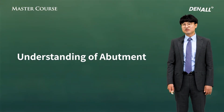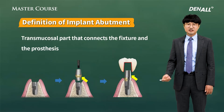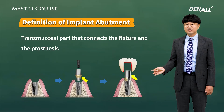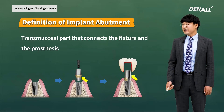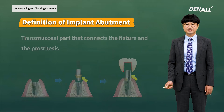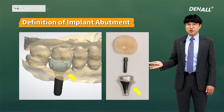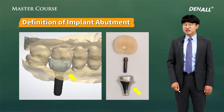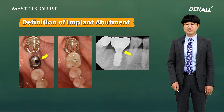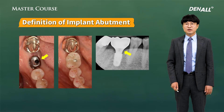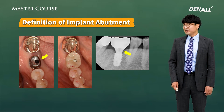First, what is an abutment? As you can see, the abutment is a transmucosal part that connects the fixture and the prosthesis. Here, they are indicated with the arrows. Usually, they are connected to the fixture with a screw and connected to the crown via cementing.